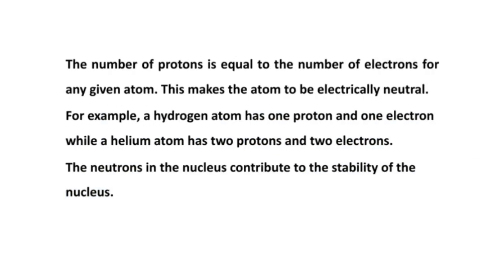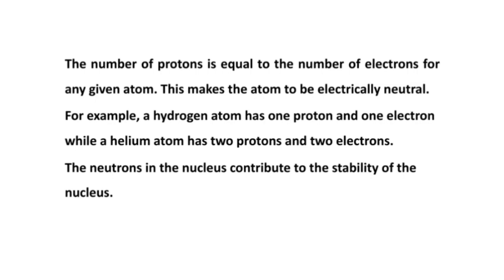Remember that the number of protons is usually equal to the number of electrons for any given atom, and this makes the atom electrically neutral. So if you are asked to explain why an atom is electrically neutral, the reason is because of the equal number of protons and electrons that counterbalance each other. For example, hydrogen atom has one proton and one electron, while helium has two protons and two electrons.